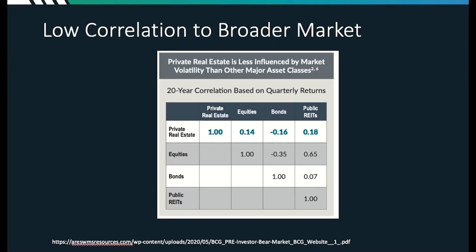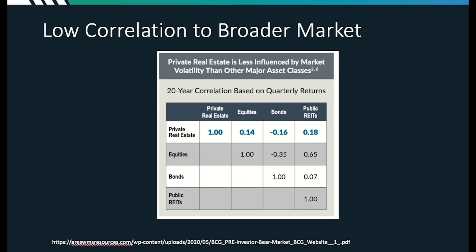Taking a deeper dive into correlation, this chart shows the correlation of each asset type. Starting at the top with private real estate and moving to the right, you can see that private real estate has a 0.14 correlation to equities — pretty close to zero, which suggests little to no correlation. If we look at the correlation to bonds, there's a slight negative correlation, but again this metric is still pretty close to zero. And a publicly traded REIT may have the highest correlation to private real estate, since we're buying similar product types, but it's still pretty low in overall correlation.